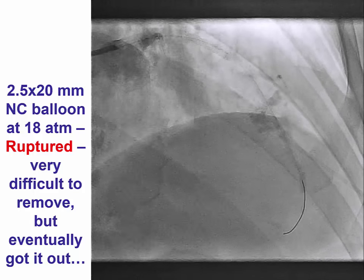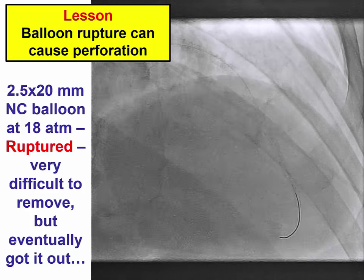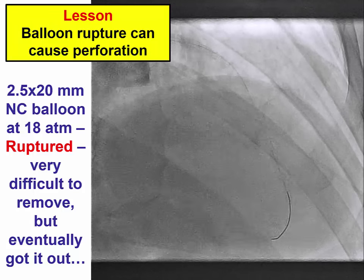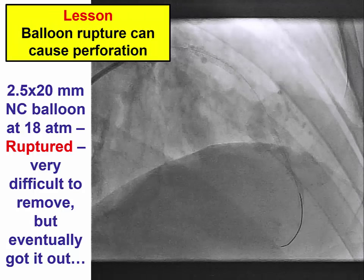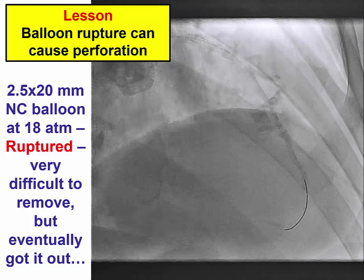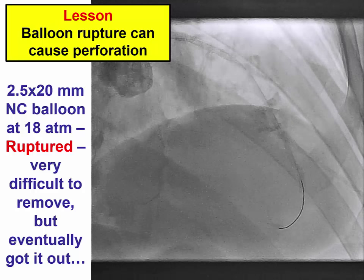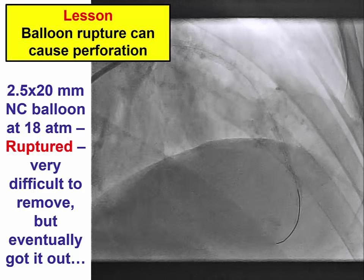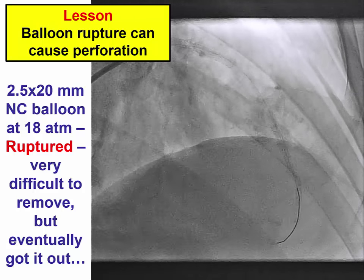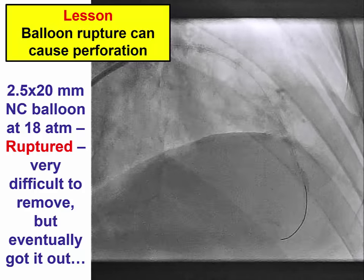So what should be the next step? Balloon rupture is something that can cause perforation, so when that happens, you want to perform a contrast injection as soon as possible to identify such a rupture quickly, so you can treat it very promptly as well.